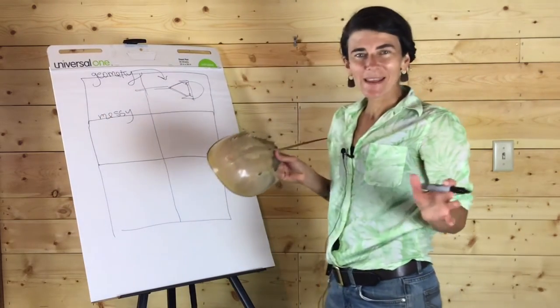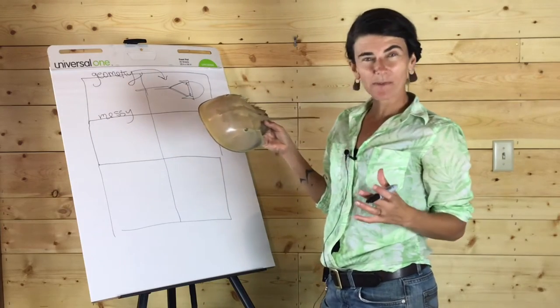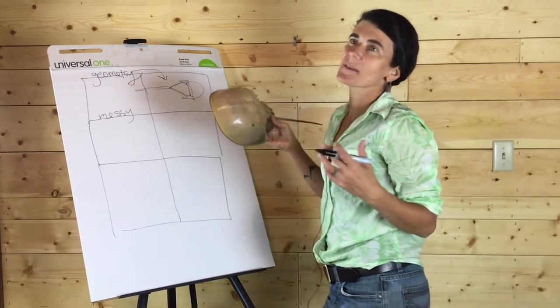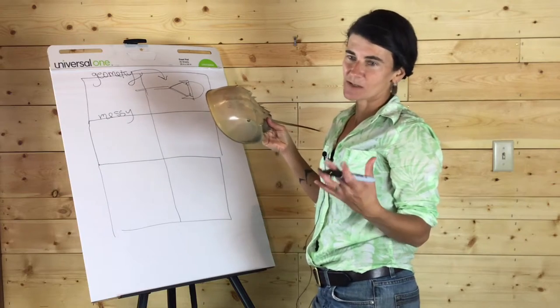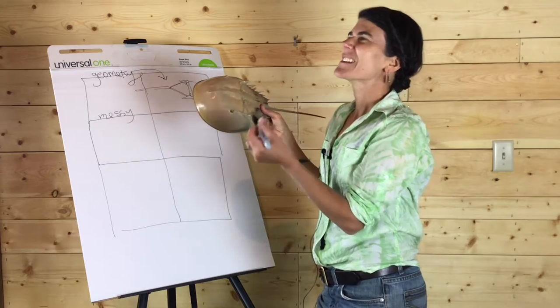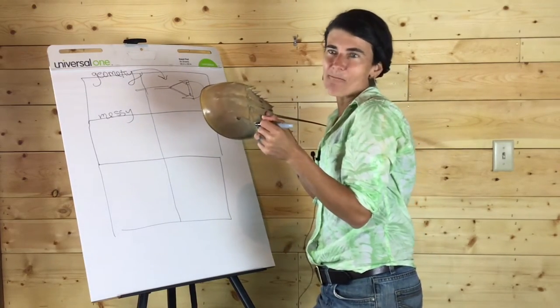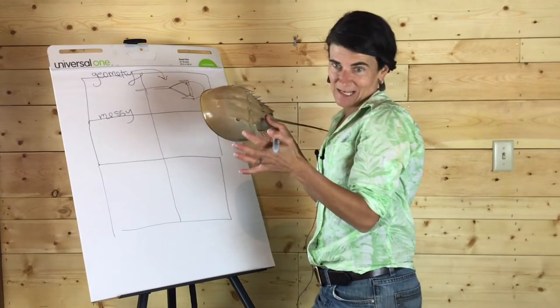So for the messy sketch, it is another way to kind of look at the overall shape of your subject, but rather than breaking it down into geometric shapes, you are going to do a really fast, really energetic, messy sketch where you just are scribbling and using tons of lines.